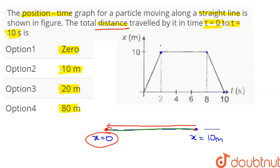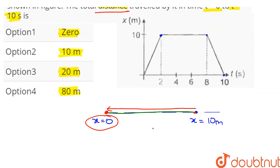But since we are asked about the distance, the distance will be equal to 10 meters for traveling from 0 to 2 seconds, plus 10 meter distance traveled from t equal to 8 to t equal to 10 seconds. Therefore, the total distance traveled is 20 meters, and this is given in option 3. Therefore, option 3 is our answer.